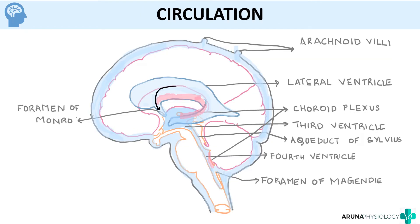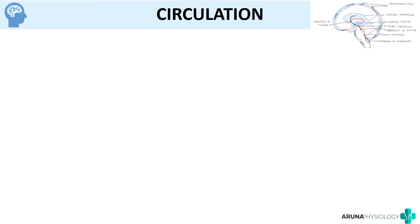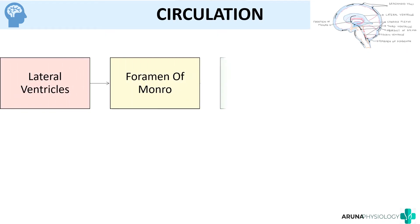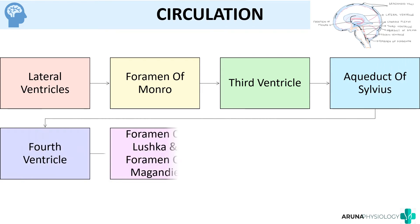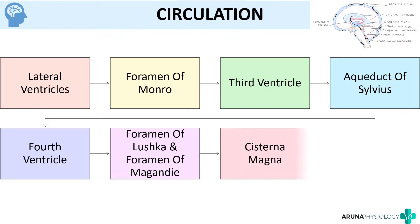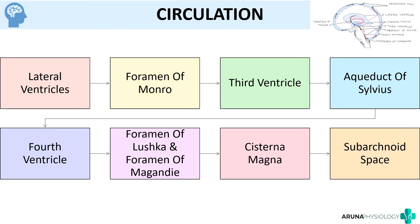To summarize CSF circulation: it fills the lateral ventricle, flows through the foramen of Monroe to the third ventricle, then through the cerebral aqueduct to the fourth ventricle, then through the foramina of Luschka and Magendie to the Cisterna Magna, and then to the subarachnoid space. From the fourth ventricle it also fills up the central canal of the spinal cord.